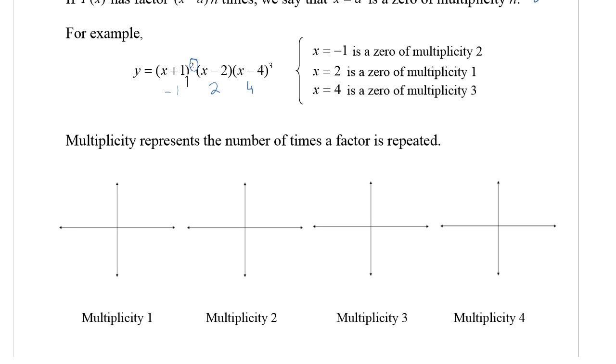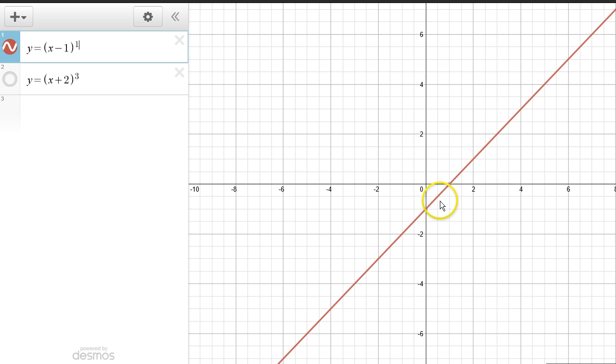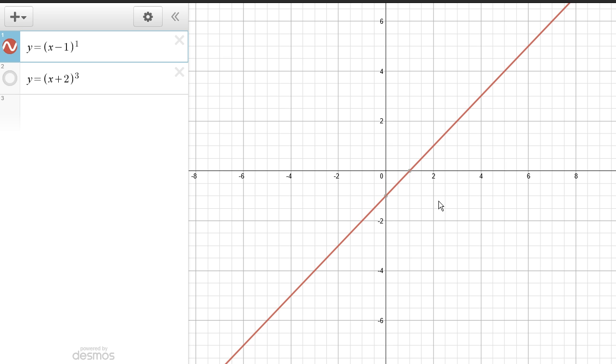We're going to try something out here. Let's do a fairly straightforward graph. I'm going to graph y = (x-1) to the 1st power, and then y = (x-1) squared, y = (x-1) cubed, and y = (x-1) to the 4th. I'll go over to Desmos and try these out, and you can sketch them in as you see them.